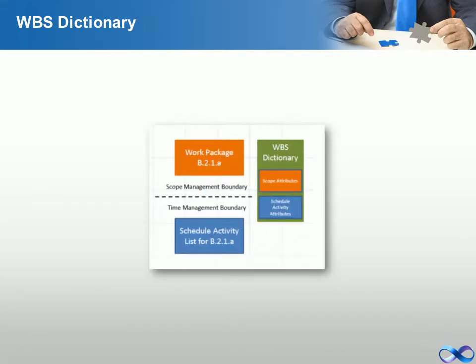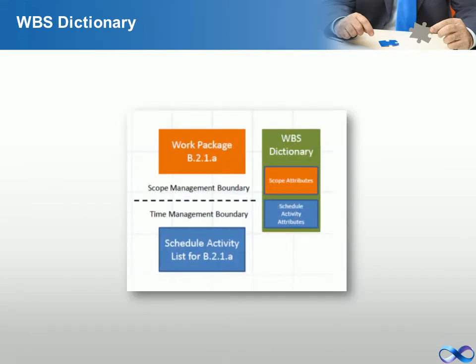The work breakdown structure diagram itself has limitations, as it is not practical to capture all the node information on the diagram. This is where the work breakdown structure dictionary plays a part, as it allows any additional information or attributes for each work package as a different document that points, or refers, back to the work breakdown structure. Put simply, the work breakdown structure dictionary provides detailed information about the nodes within a work breakdown structure.